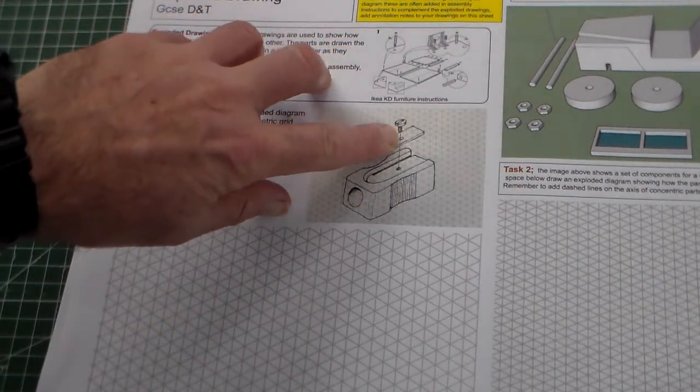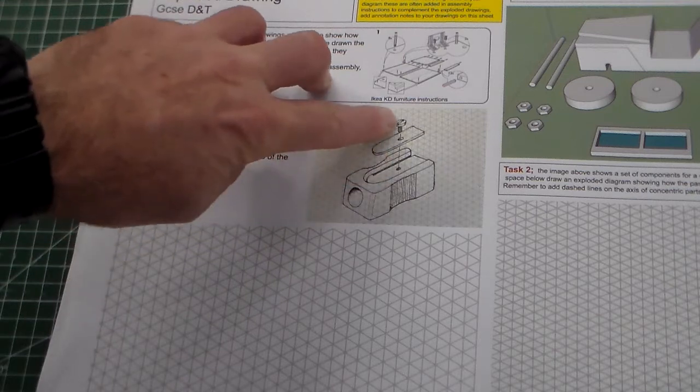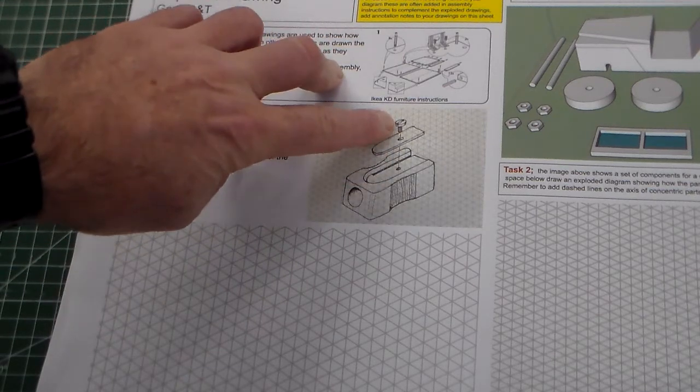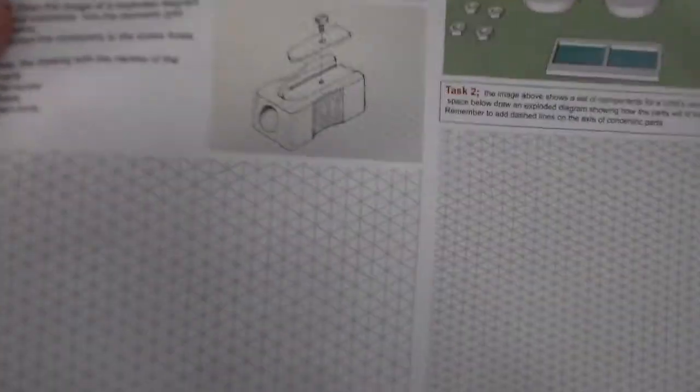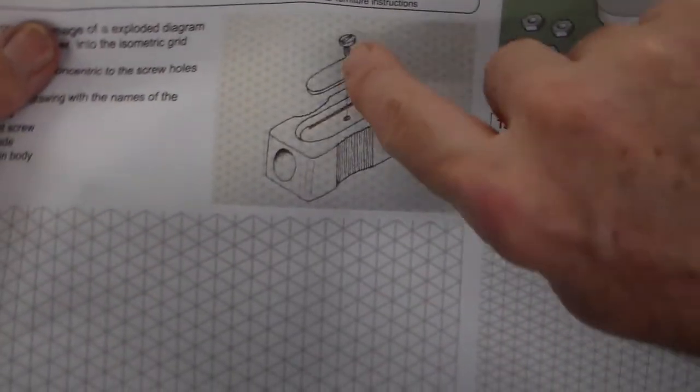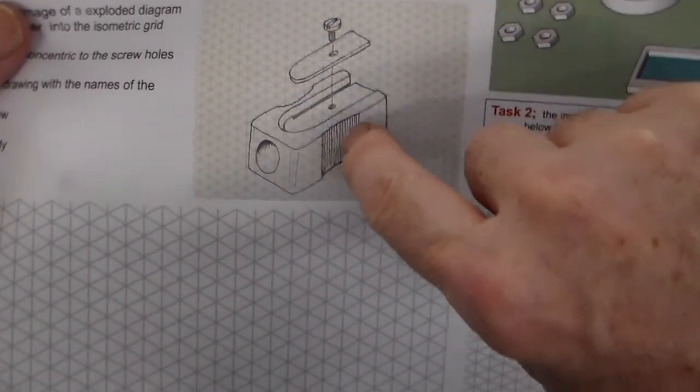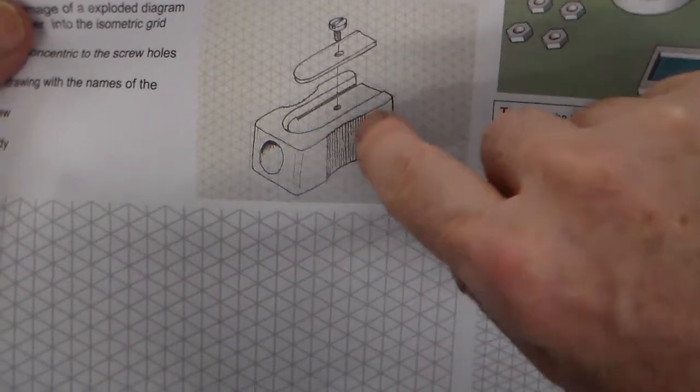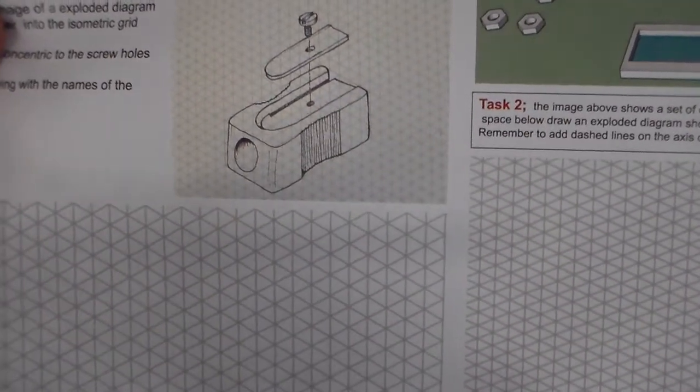There is a line here which is a dot and dash line which indicates that this screw goes through the blade assembly, the blade part and into the body of the pencil sharpener.